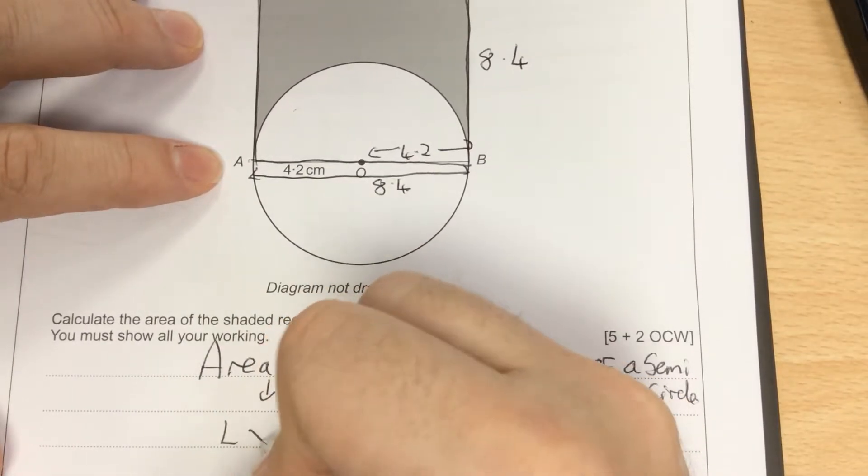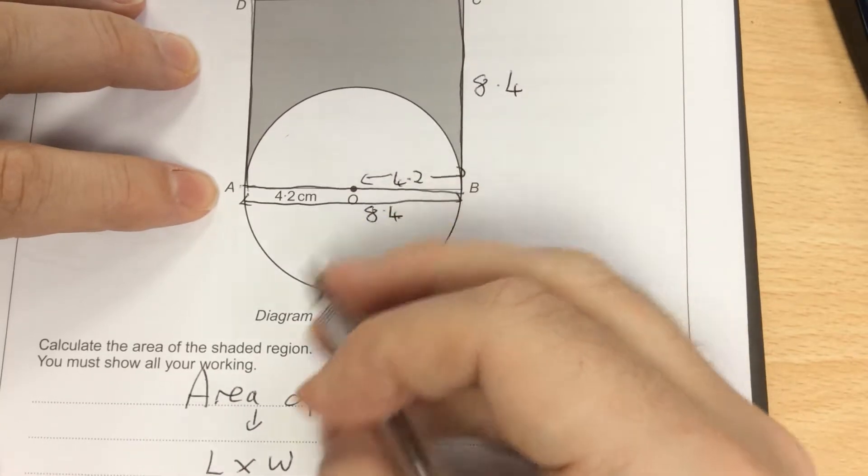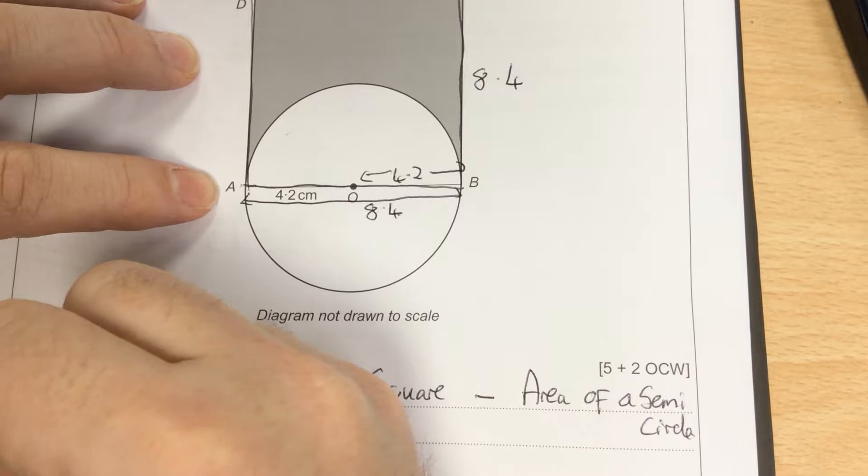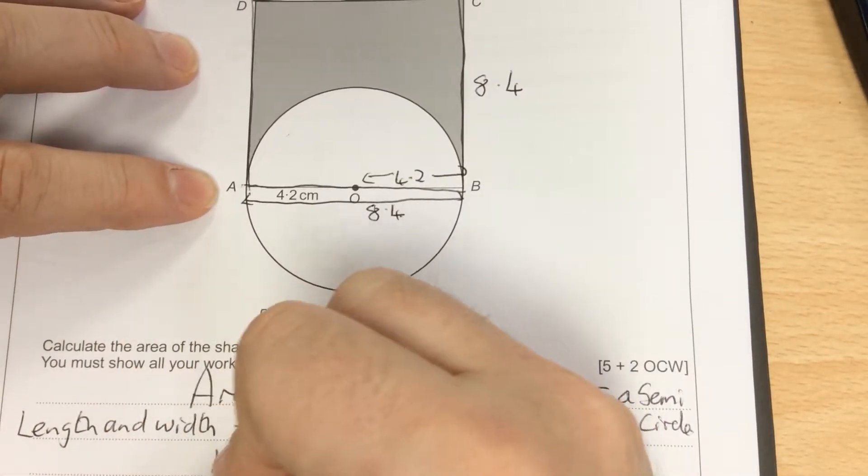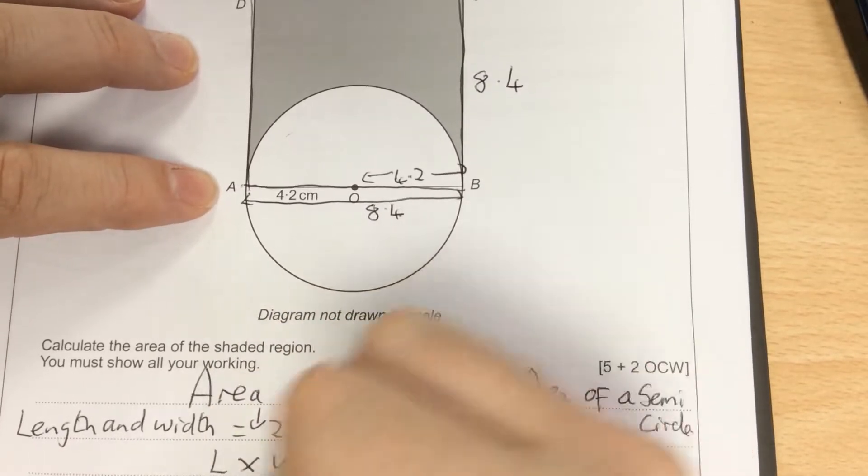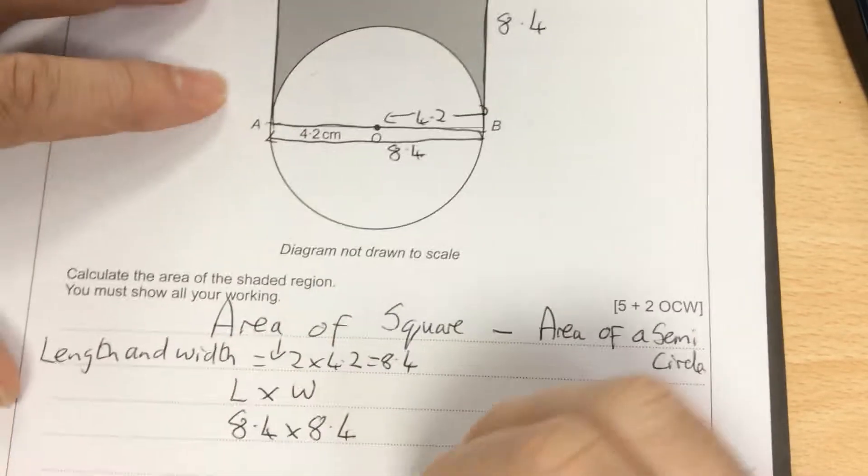So the area of a square is length times width. And from this question, the length and width is going to be 2 times 4.2, which is 8.4.